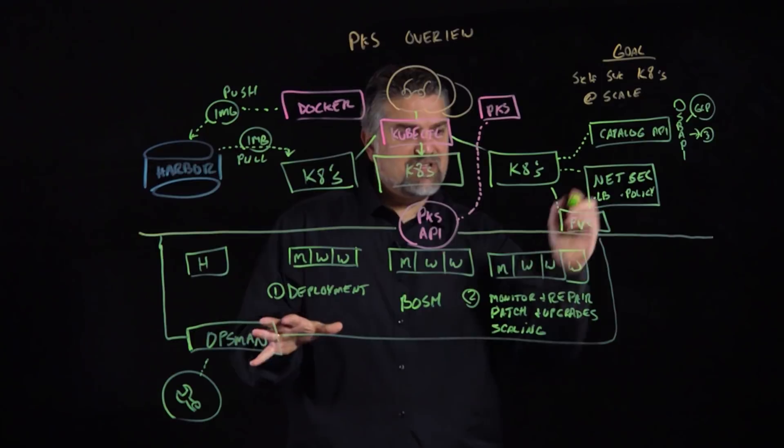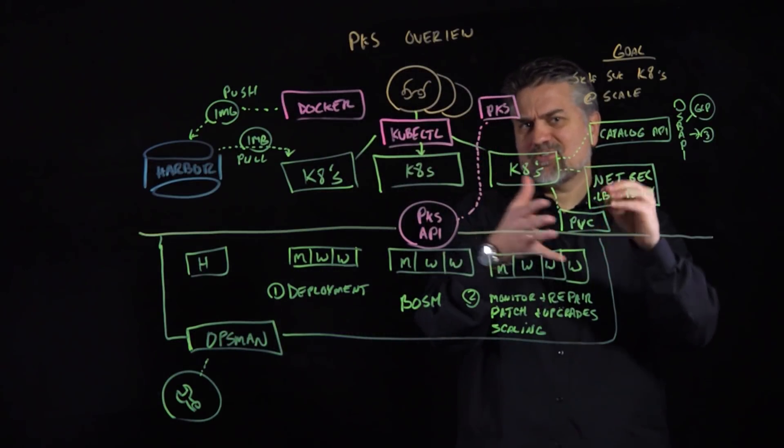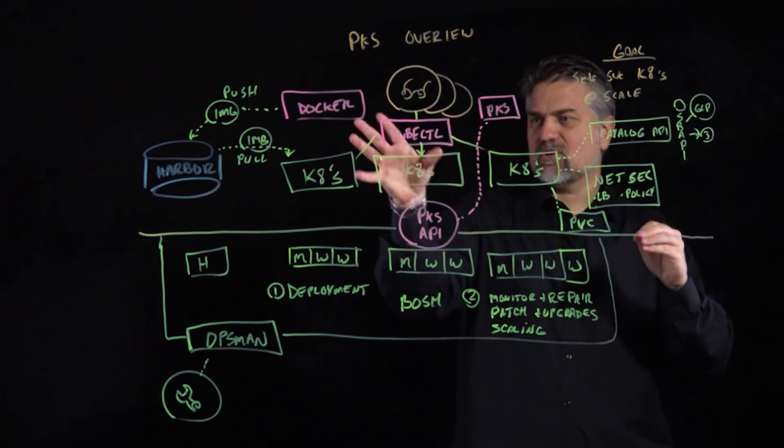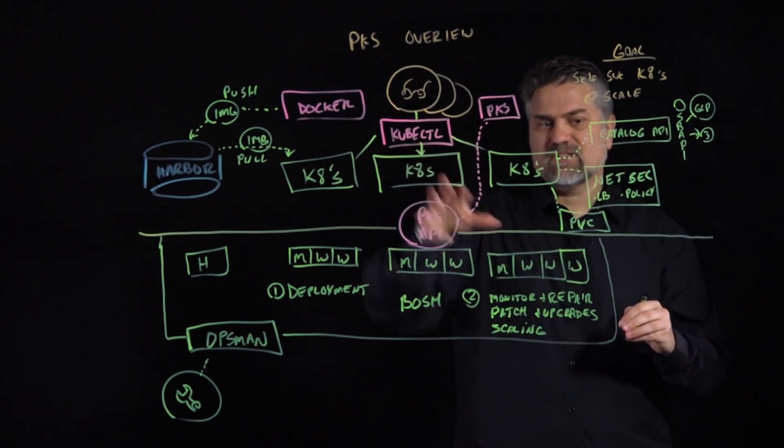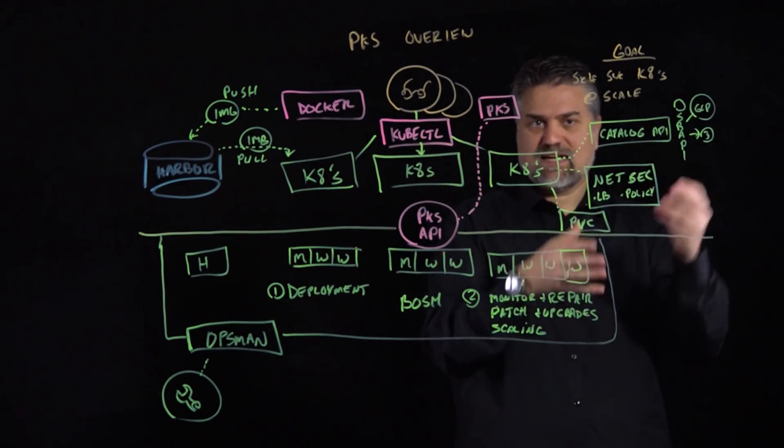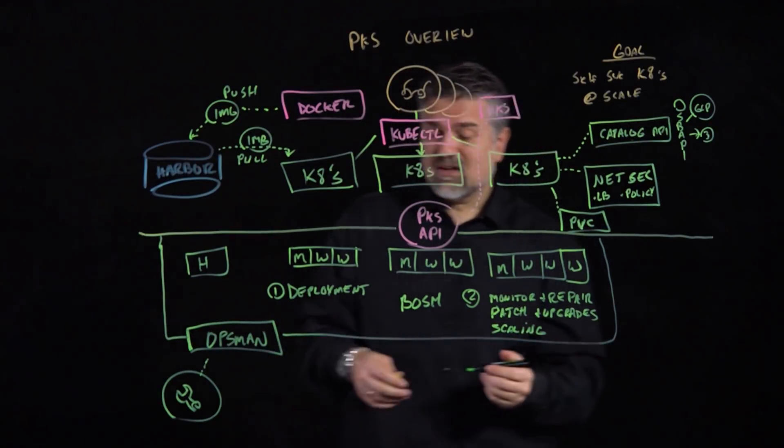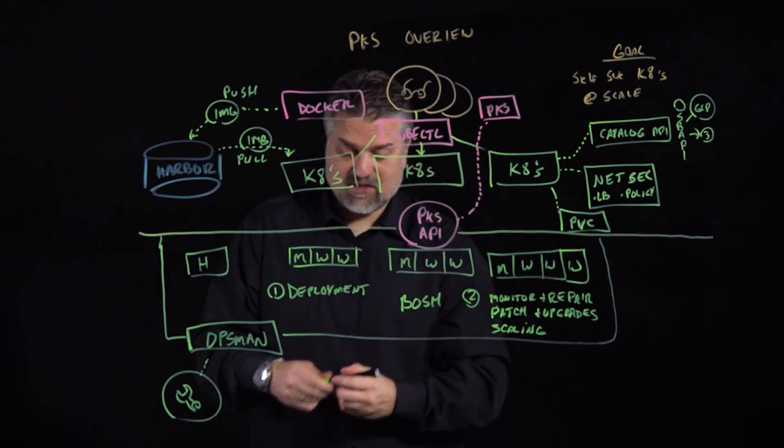We mentioned here that Kubernetes is also extending out to all these other cool things that we offer to our applications and developers. This network security with these load balancers and policy, this persistent volumes and catalog APIs. Well, some of that has to be provided by the infrastructure. So, network and security, we'll focus on that for right now. In addition to Bosh, another key component of PKS is NSX.